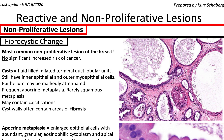This is important because on mammography there can be suspicious findings like grouped calcifications or clinical findings on physical exam. And after a biopsy is done, we might find some of these findings that show us that this is not cancer. So let's begin with fibrocystic changes.